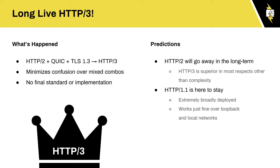HTTP/3 basically encompasses HTTP/2, QUIC as the UDP transport for that protocol, and TLS 1.3 as an underlying requirement. This avoids situations where you'd have QUIC with HTTP/1.1, or HTTP/2 without QUIC, or QUIC without TLS 1.3. There's no final standard implementation yet. I expect HTTP/2 will go away long-term, though many applications will continue to support HTTP/1.1 at least within data centers and over high-bandwidth links.